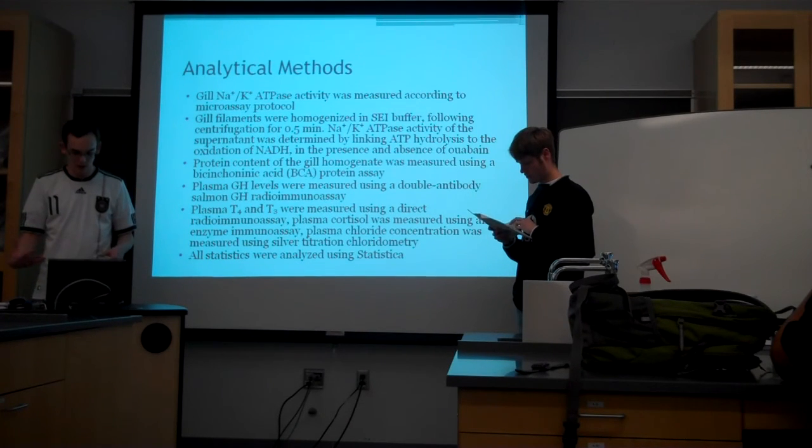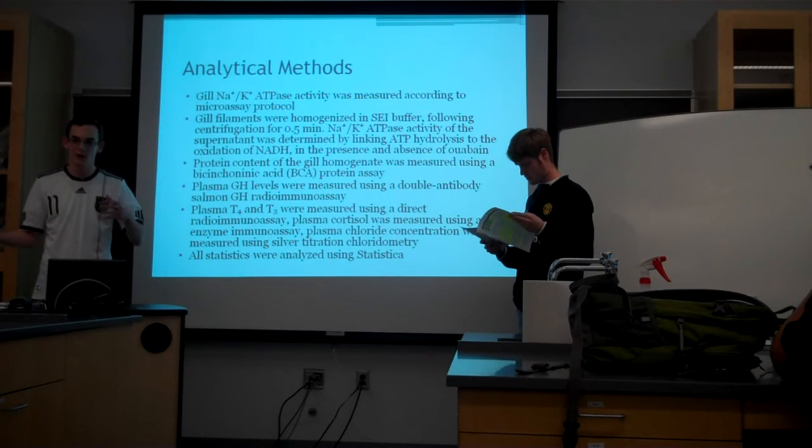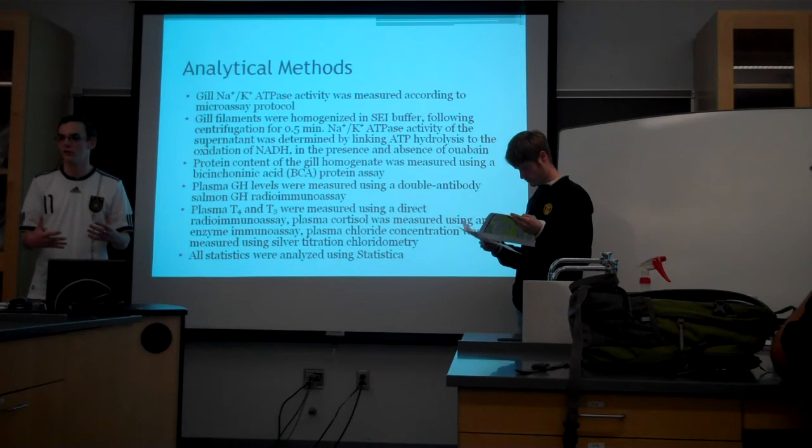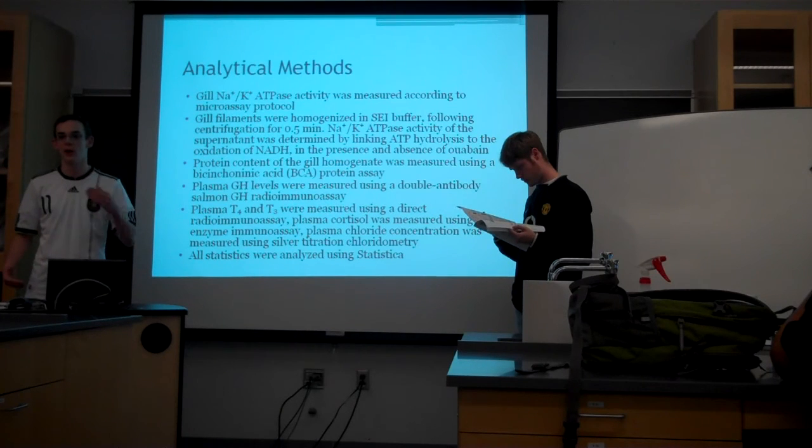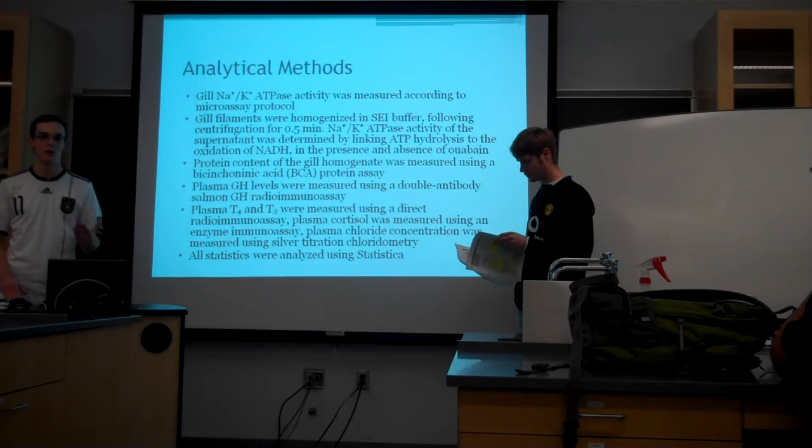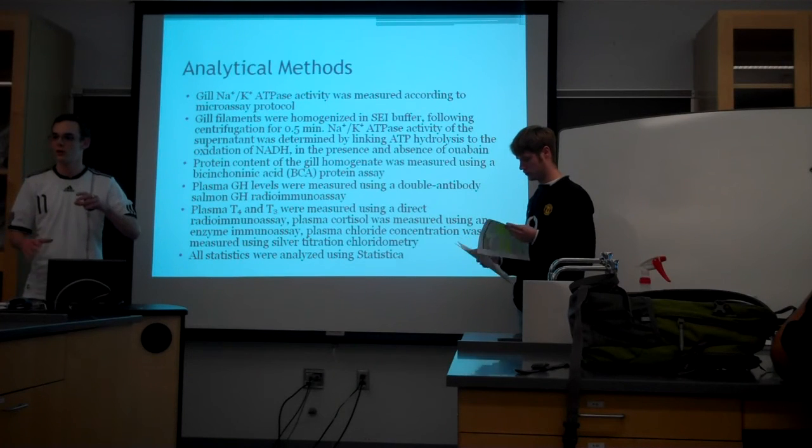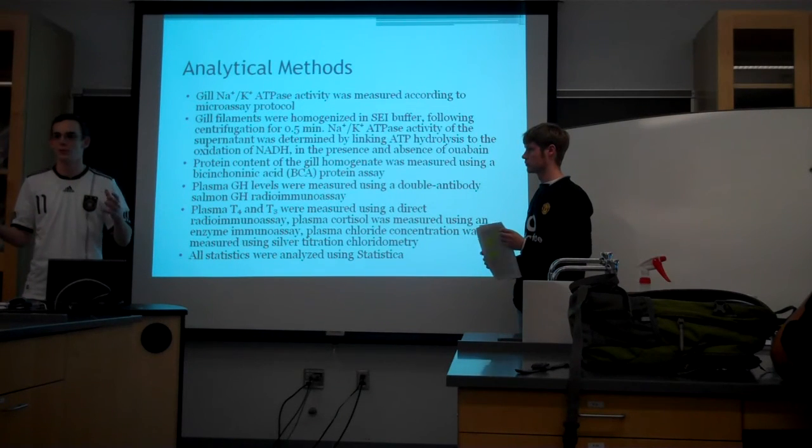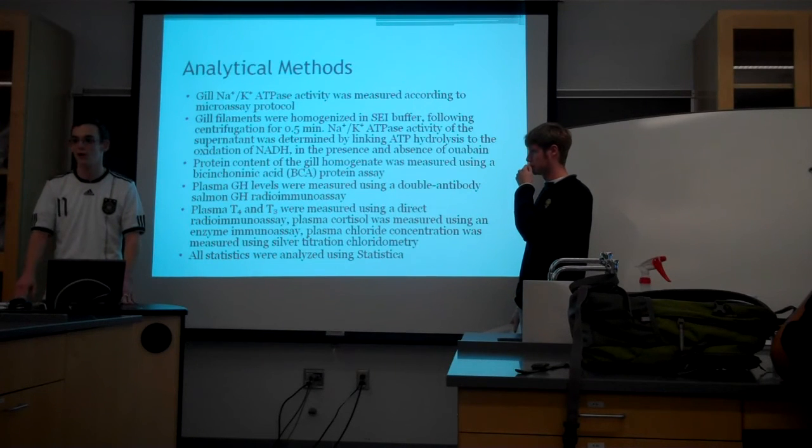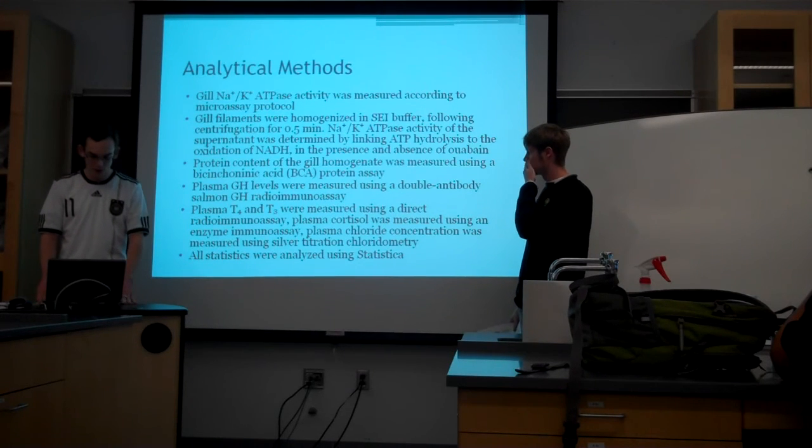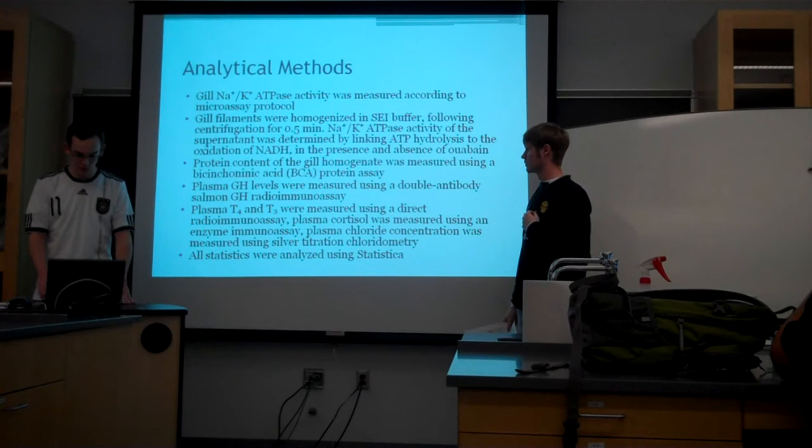They take the plasma chloride and they stick it in this concentrate. It's like a silver bath, kind of. And when the chloride binds to the silver, it falls out of the solution as precipitate. And then once the silver concentration is exceedingly high, the computer measures it and stops measurements, so you can determine how much chloride is in the plasma. And all statistics were analyzed using SAS JMP.